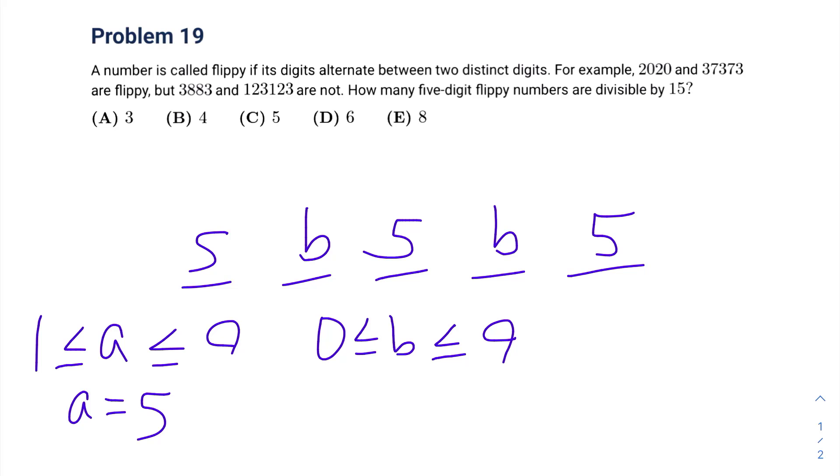We also know that our number is divisible by 3. To check if a number is divisible by 3, first we have to find the sum of our digits, which will just be 2B plus 15.